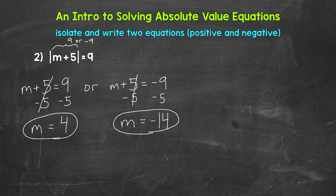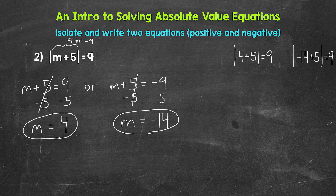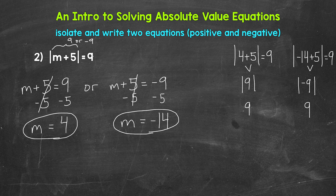Those are our two solutions. Let's check them by plugging in for m. The absolute value of four plus five equals nine: four plus five gives us nine, and the absolute value of nine is nine — correct. For negative 14: negative 14 plus five gives us negative nine, and the absolute value of negative nine is nine. So we are correct. Those are our two solutions.